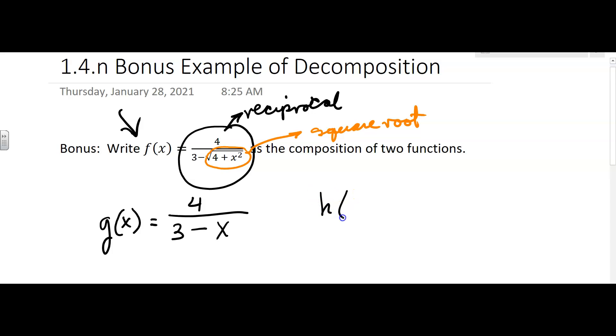My second function, my h of x, is going to be that little part. So it's going to be the square root of 4 plus x squared. Now you have to be careful that you get everything in.